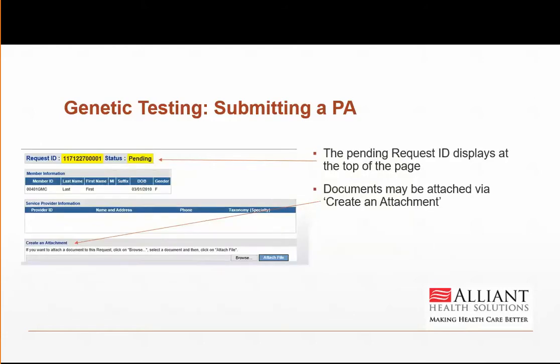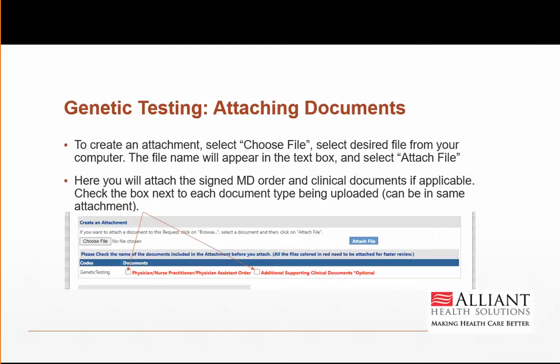You will be taken to a screen that displays the prior authorization number. You can print this screen or write down the number for your records. You will also have the ability to attach documents here. To create an attachment, click Choose File and select the desired file from your computer. The file name will appear in the text box. Then select Attach File. This is where you will attach the signed provider order for the test being requested. You can also upload any other clinical documentation at this time, either in the same document or in separate documents.